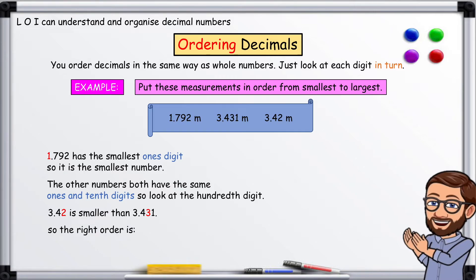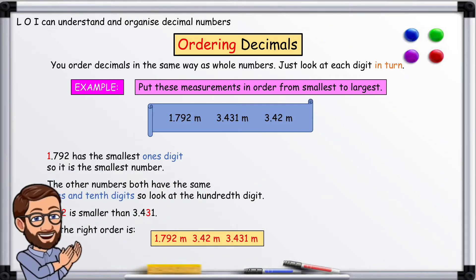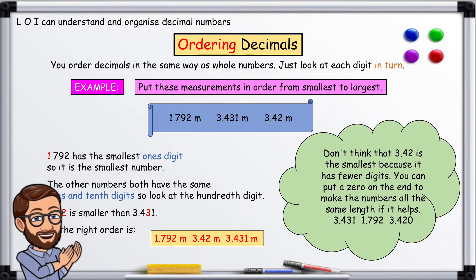So the right order is 1.792, 3.42, 3.431. Don't think that 3.42 is the smallest because it has fewer digits. You can put a zero on the end to make the numbers all the same length if it helps: 1.792, 3.420, 3.431 — so all of those have the same amount of digits.